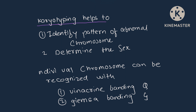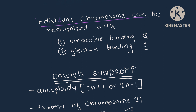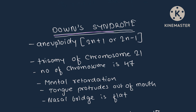Karyotyping helps to identify the pattern of abnormal chromosomes and determine the sex. Individual chromosomes can be recognized with G-banding and Q-banding. Down syndrome means trisomy of chromosome number 21, and the number of chromosomes in the individual is 47.